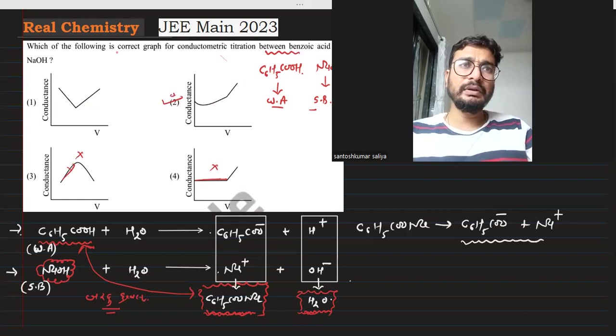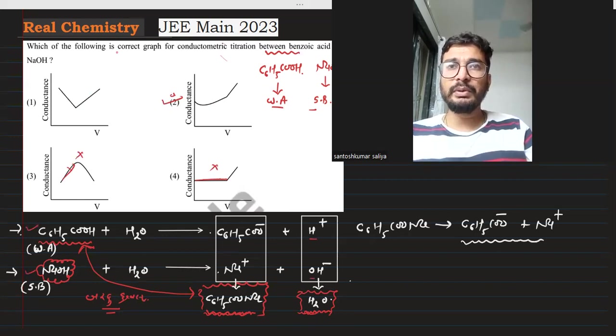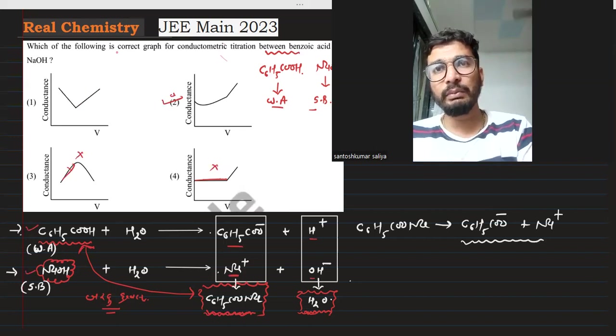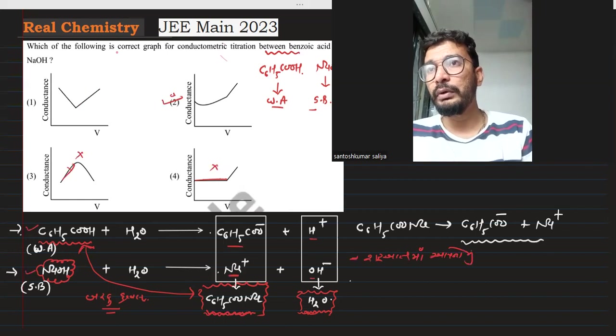When NaOH is added, H+ and OH- neutralize. C6H5COO- and Na+ remain. At the beginning, the conductance starts with the acid, then changes as we add NaOH.